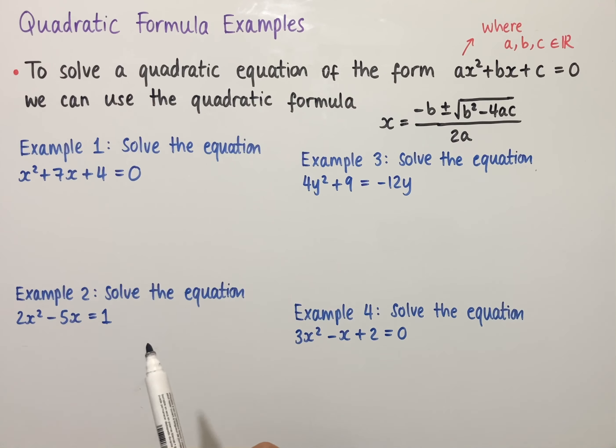The first example says solve the equation x² + 7x + 4 = 0. When using the quadratic formula, the first thing we should do is identify the coefficients of the terms within the quadratic. The first term, x², has a coefficient of 1, so a = 1. The second term, 7x, has a coefficient of 7, so b = 7. And the number on its own at the end is 4, so c = 4. Now that we know what a, b and c are, we can substitute into the quadratic formula to solve this equation.